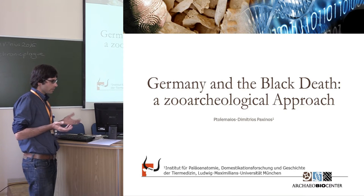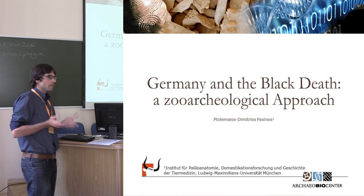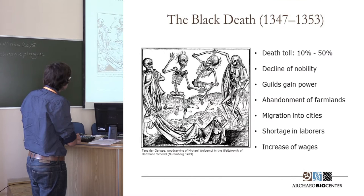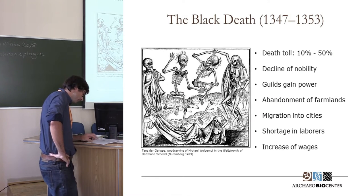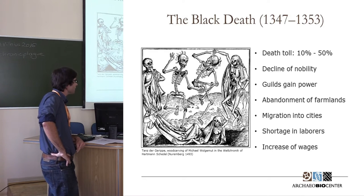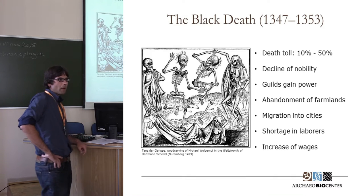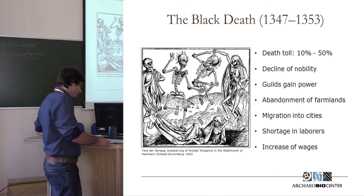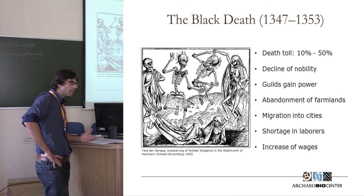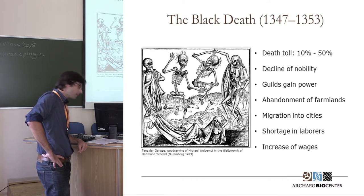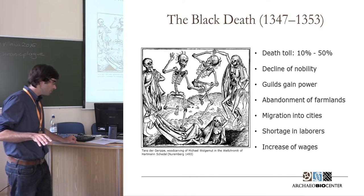And why are we doing this? Because if something affected the people, then this affected maybe the domesticated animals too. The Black Death was a devastating disaster — one of the greatest disasters in European history. And in a century marked by several crises, the Black Death seems to have been the greatest of all, causing the demise of millions with an estimated death rate between 10 and 50%. The Black Death had a significant impact on medieval society with various far-reaching socio-economic implications.